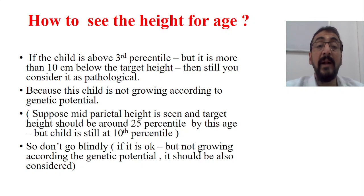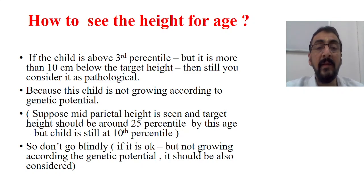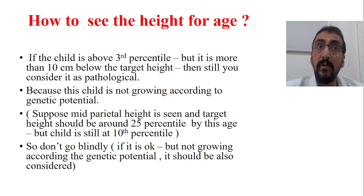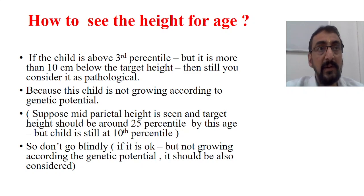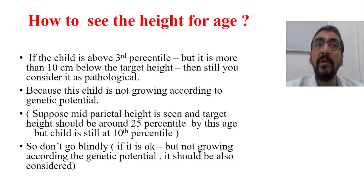Now suppose the mid-parental height is seen. How to calculate the mid-parental height? In the mid-parental height, if the target height should be around the 25th percentile by this age but the child is still on the 10th percentile — taking the same case of pathological short stature where the child is above the short stature level but too less than the estimated level — suppose the estimated level of height is 140 cm but this child is only having 125 cm, almost 15 cm less than the estimated level. In that condition, you decide that this child is not growing according to genetic potential, and you go for the mid-parental height.